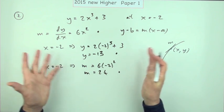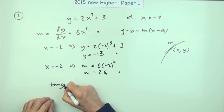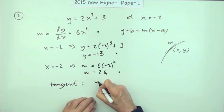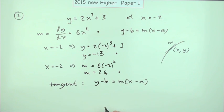There's three marks. And lastly, so what is this tangent? Well it's a line, y minus b is m times x minus a is the template you're going to use.